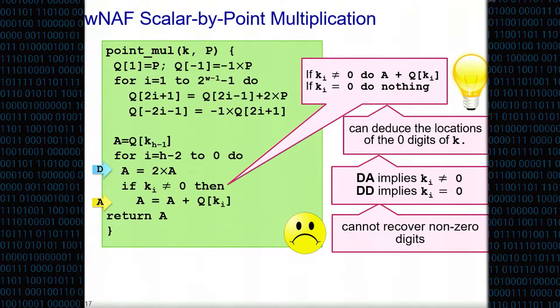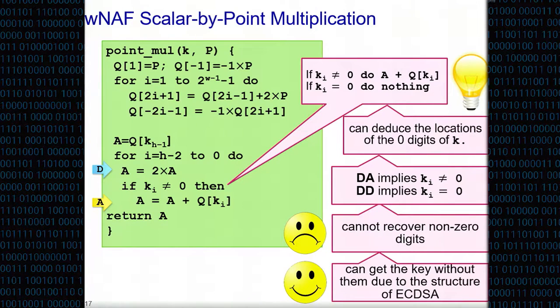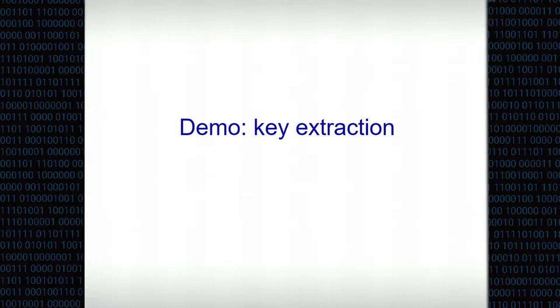If we see a double followed by an add, then this k_i was not zero. If we see a double followed by a double, then k_i was zero. We can deduce by looking at the double-add sequence, or DA sequence of this algorithm, the location of the zero digits of k in that representation. Unfortunately, it stops there - we will never be able to recover the exact value of the digit other than the fact that it is not zero. On the looks of it, we're stuck because we know something but we don't know everything. But the nice part about ECDSA is that we don't need to - knowing the zero digits of the nonce is enough to break the scheme.